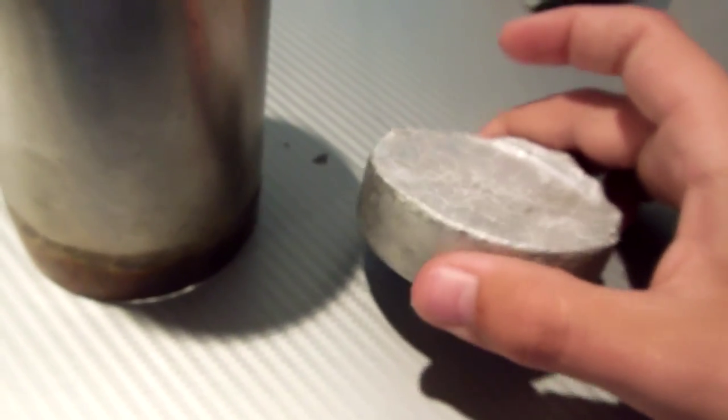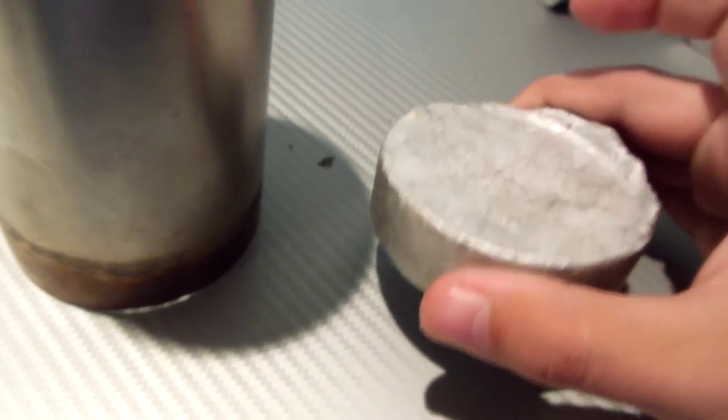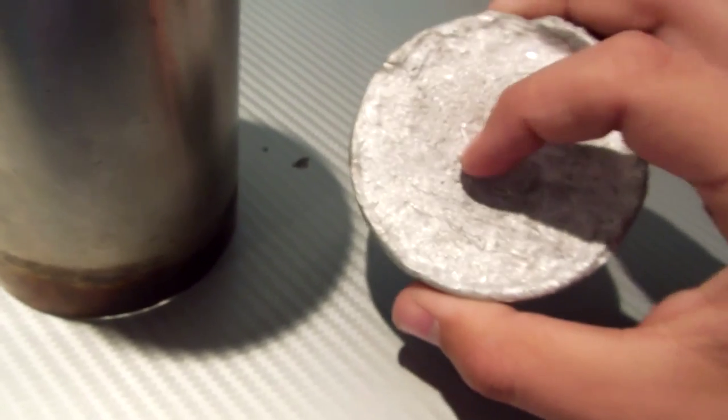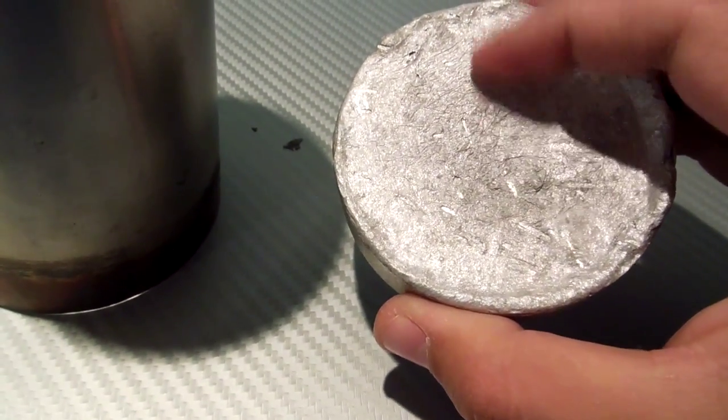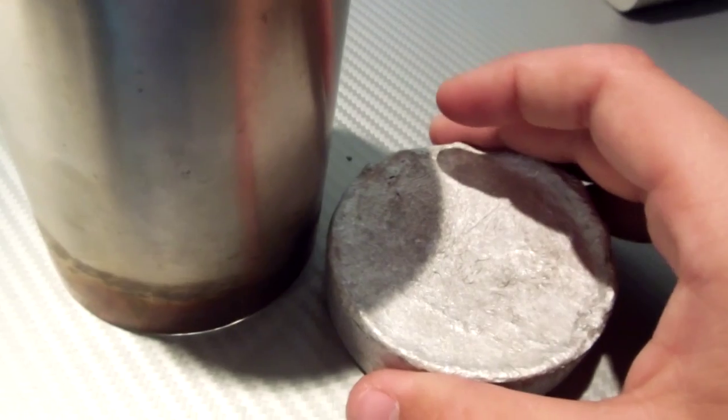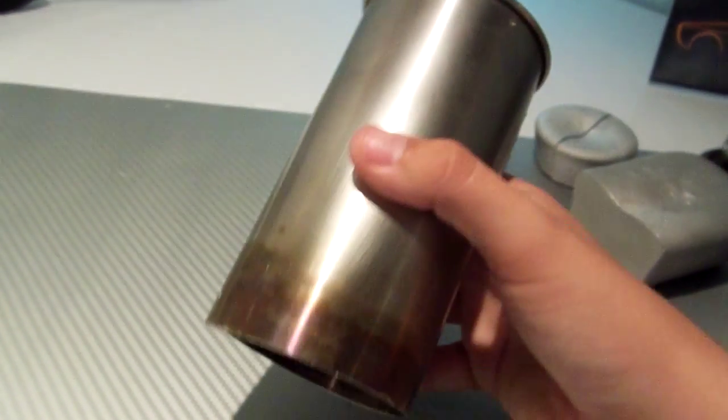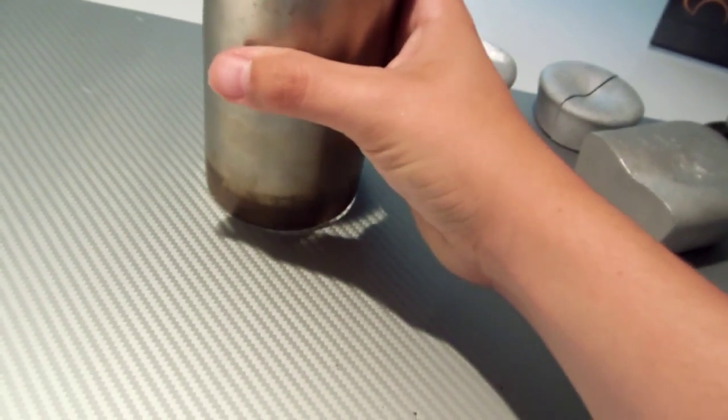And then we have the third casting. This one actually failed. The aluminum wasn't liquid enough. So this is only a tiny part. The rest of it was just not good. I poured into this cylinder, stainless steel cylinder, and I cut the bottom off to get it out because it was stuck in there.